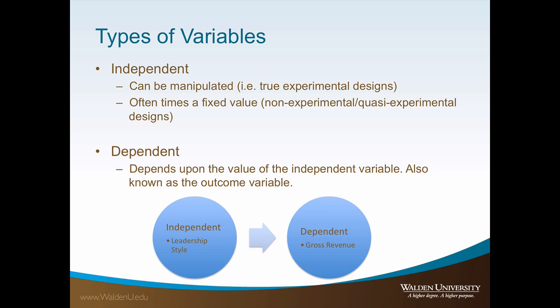The dependent variable is the variable whose value is dependent upon the level or measurement of the independent variable. The dependent variable is also known as the outcome variable. The model presented depicts a graphical portrayal of the relationship between the independent and dependent variable. In this example, leadership style is shown to be a predictor of or influencing factor of gross revenue, the dependent variable. Notice how the variables are presented in temporal order — the independent variable is presented before the dependent variable.